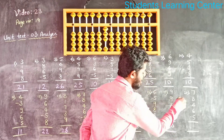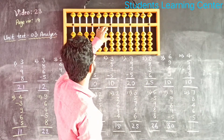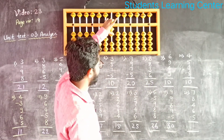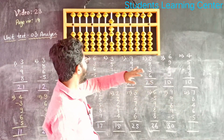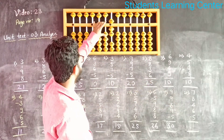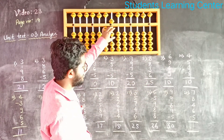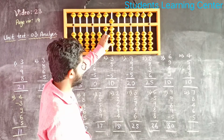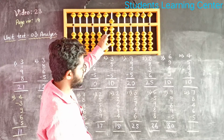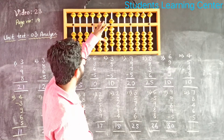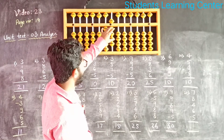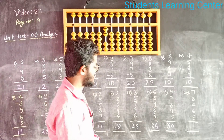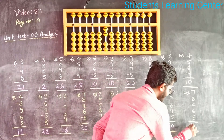Next question. Add 7, add 8, add 10 less 2, add 4, add 6, add 10 less 4, less 5. Answer is 20.